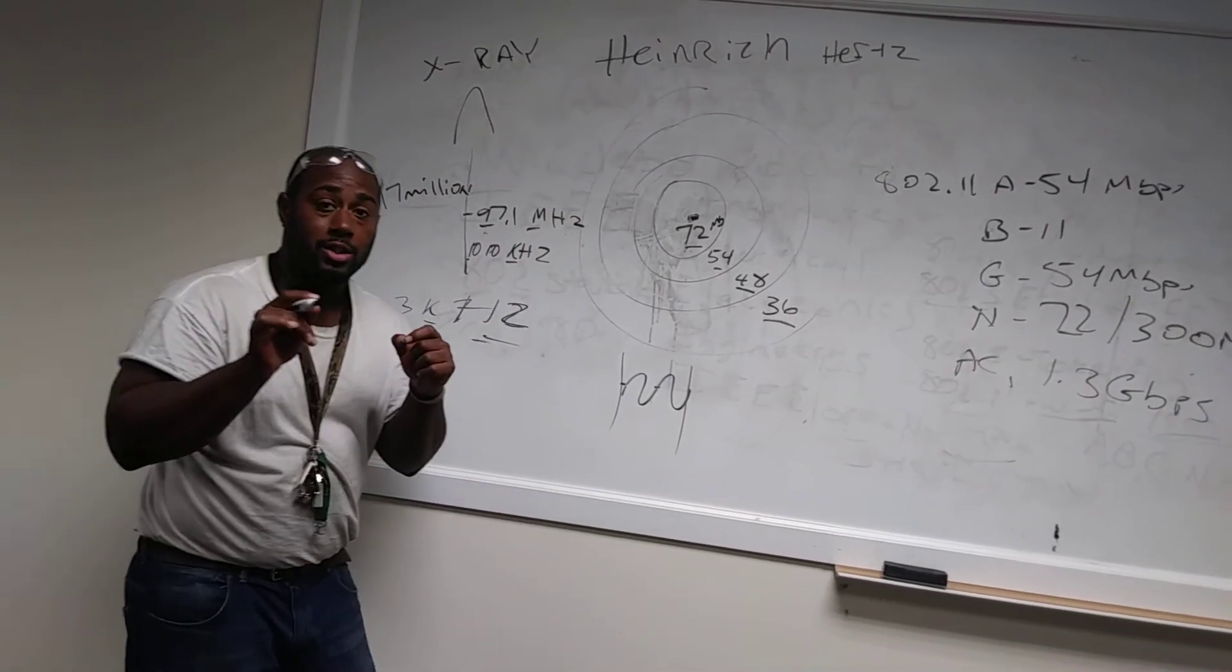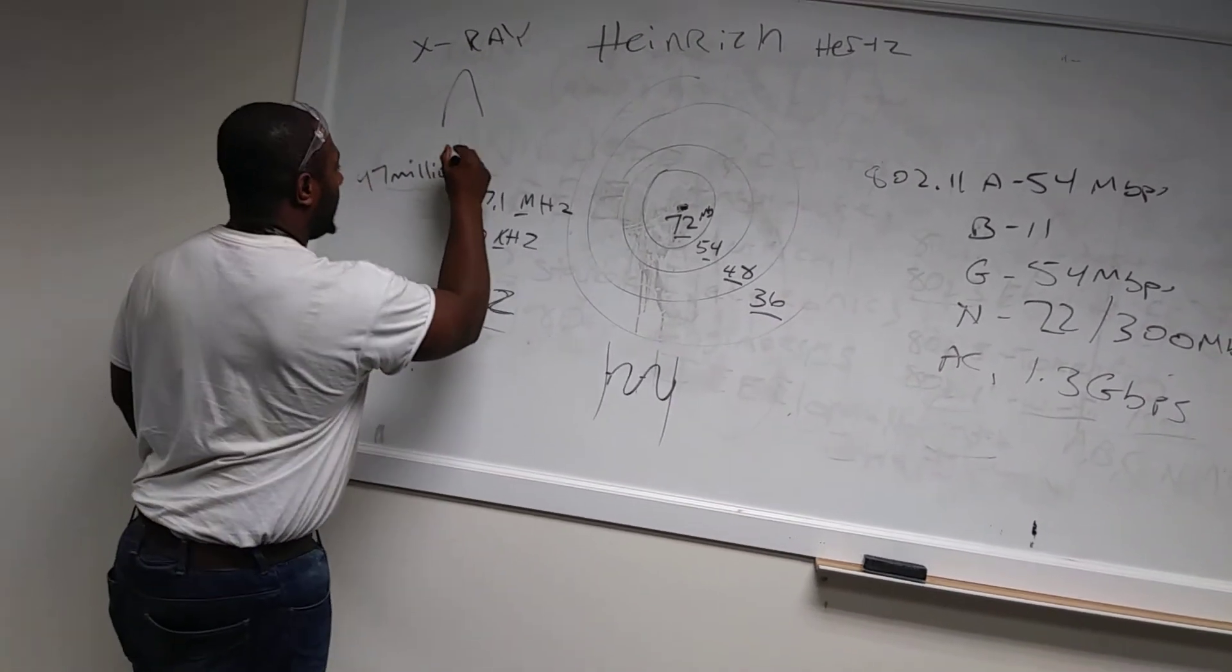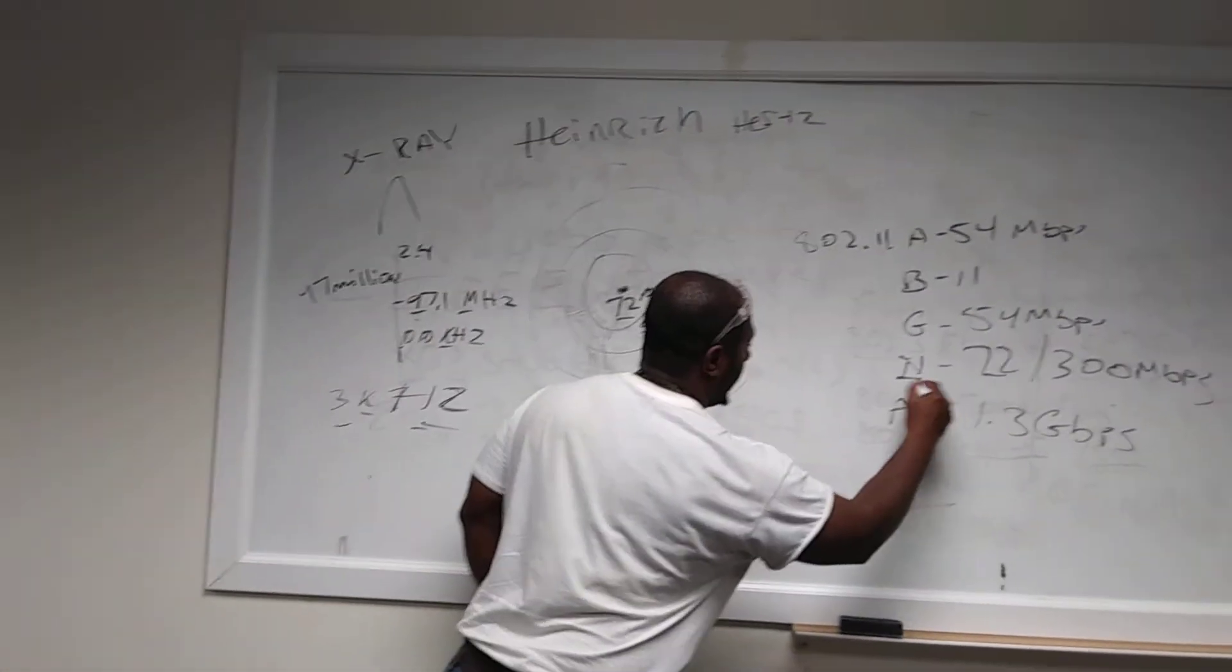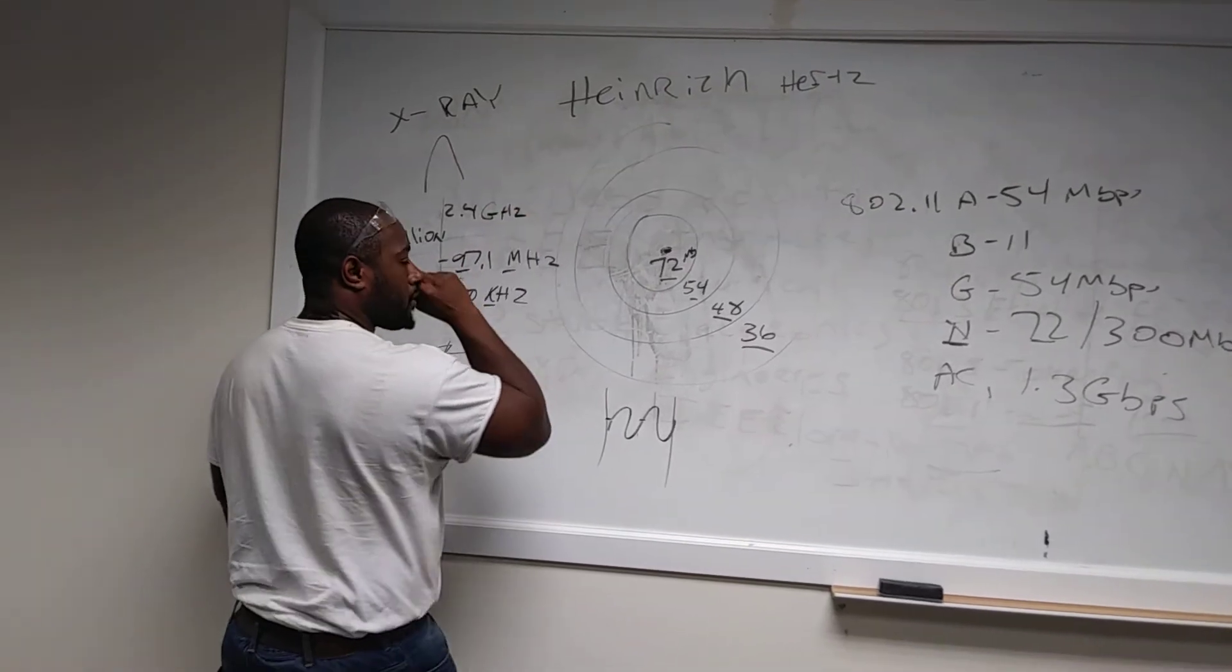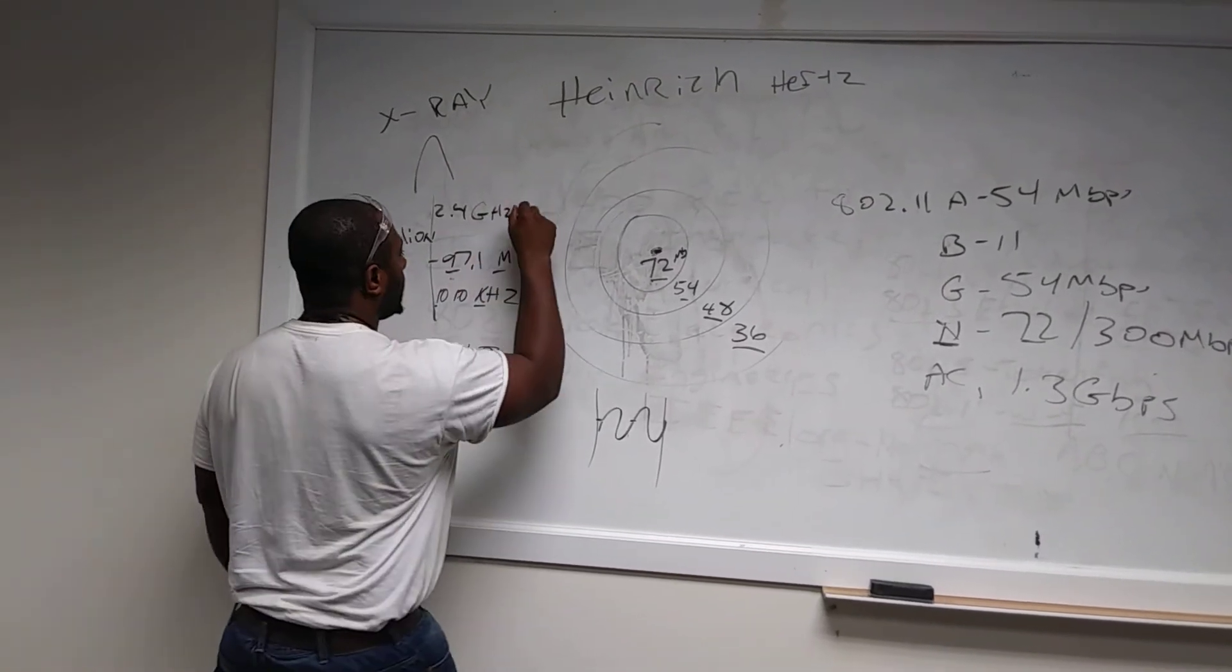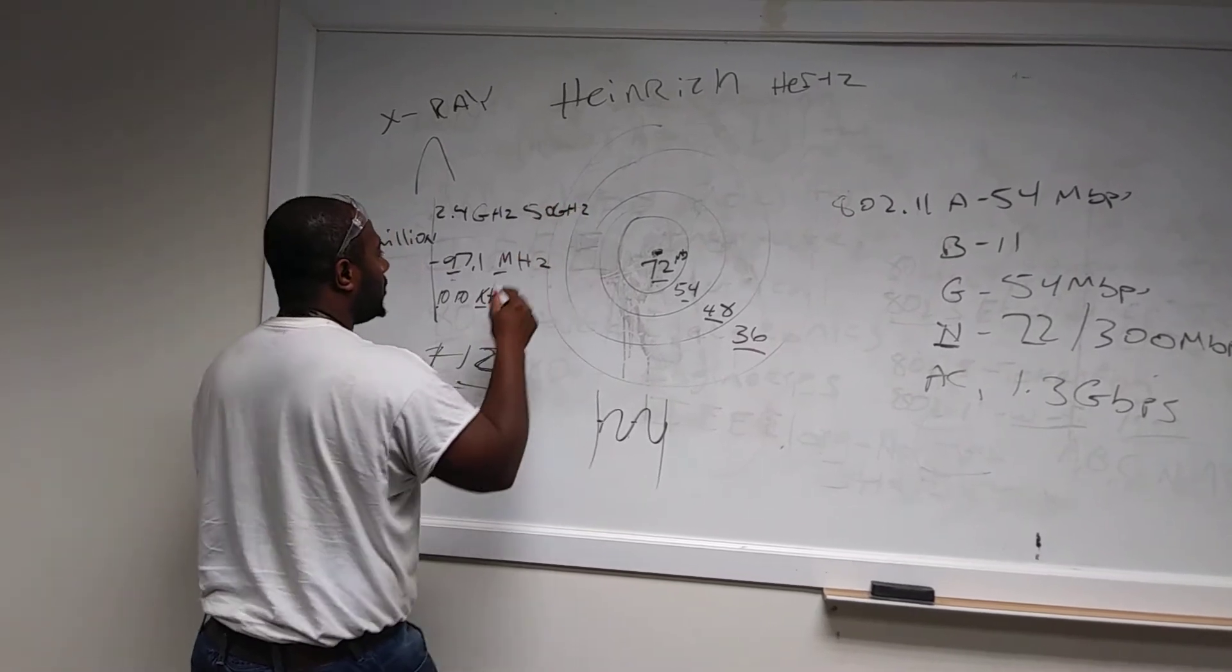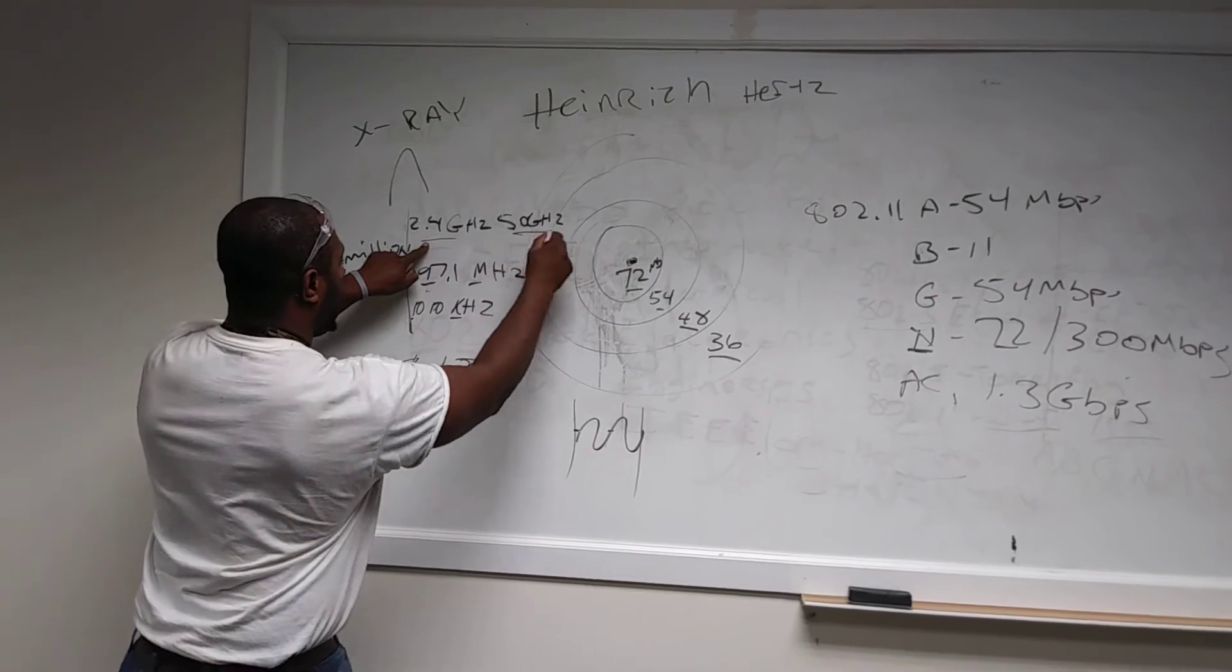Let's say if you listen to 1010 WINS, 1010 WINS is a radio station in Jersey that oscillates at 1,010 kilohertz per second. If you listen to Hot 97, Hot 97 is a radio station that oscillates at 97 million megahertz. Now, where does Wi-Fi come into this equation? Wi-Fi fits into 2.4 gigahertz and 5 gigahertz frequency range.